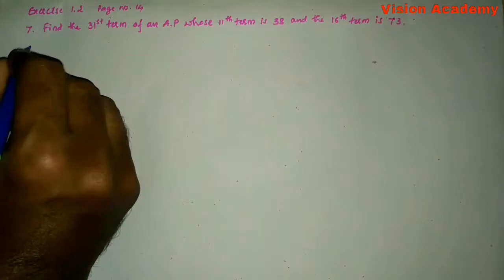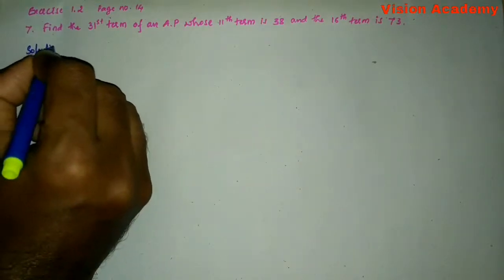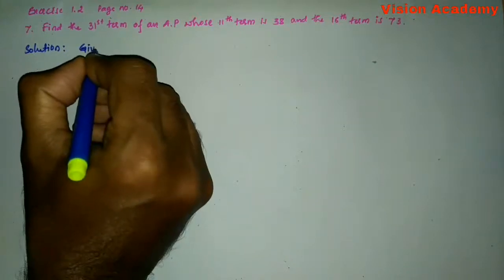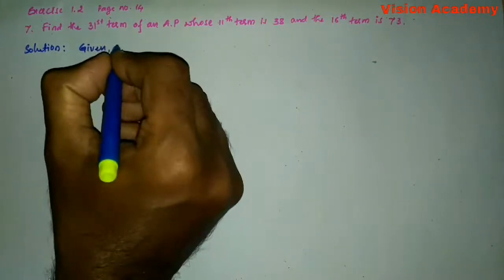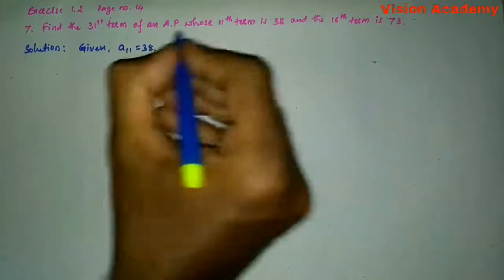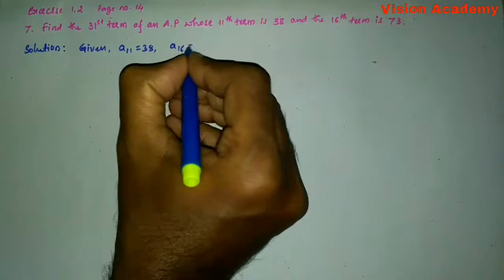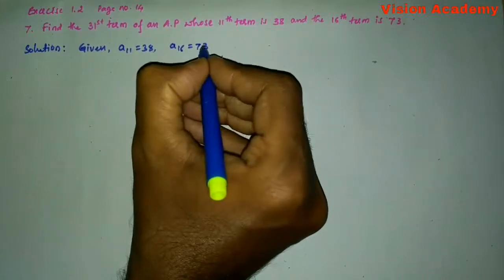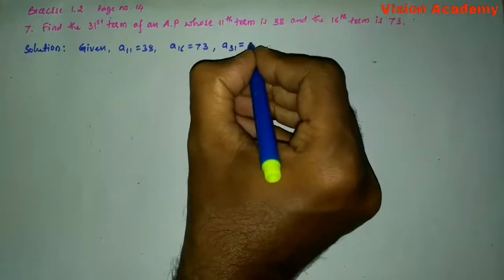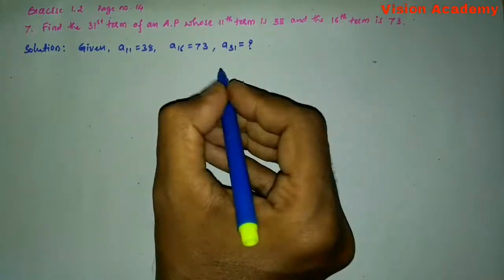Now, let us find the solution for the given problem. So, here let us write first: given, 11th term A11 is equal to 38 and 16th term A16 is equal to 73. We need to determine: 31st term is equal to what?